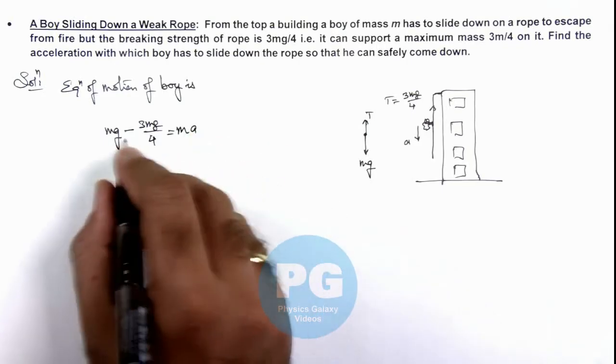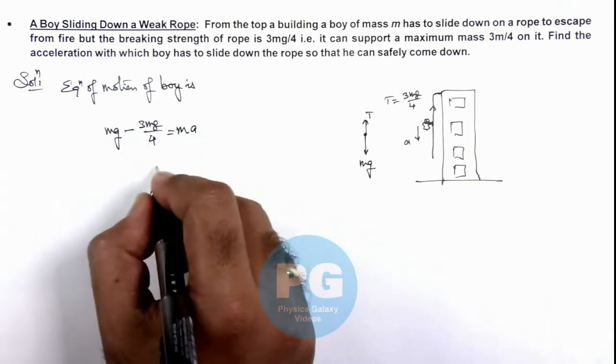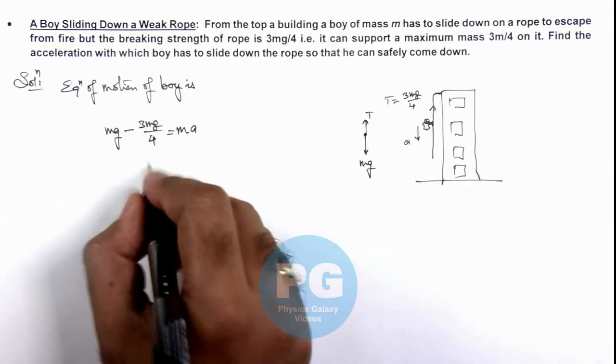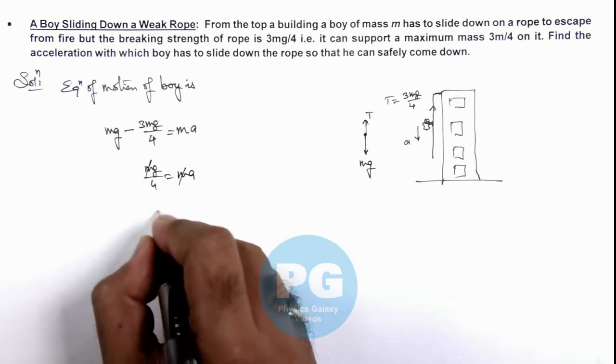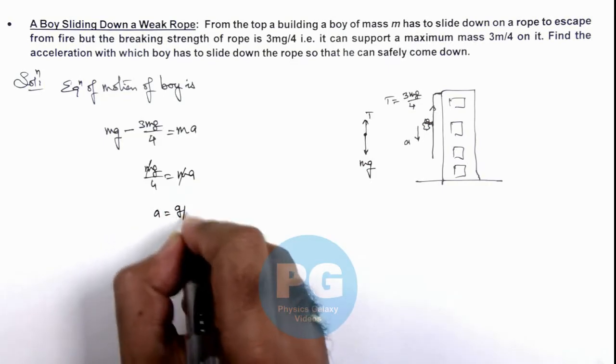If we solve this equation, on the left hand side we get mg/4 is equal to ma. m gets cancelled out and the value of acceleration is g/4.